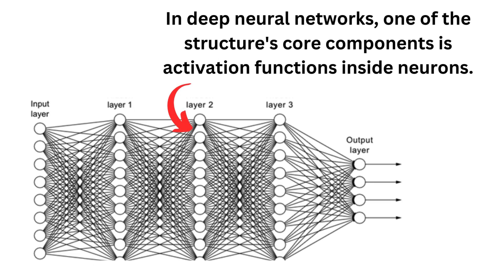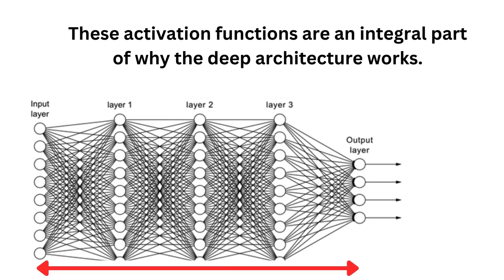In deep neural networks, one of the structure's core components is the activation function inside neurons. These activation functions are an integral part of why the deep architecture works.